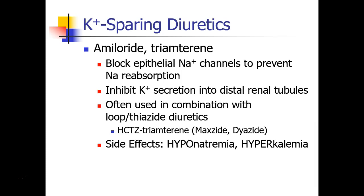Most of the drugs we've talked about involve losses of free water together with sodium, and most of them also cause losses of potassium. But there's a subset called potassium-sparing diuretics. These include amiloride and triamterene, often seen in combination with other drugs. They block epithelial sodium channels and prevent sodium reabsorption — that's your diuretic effect — but they inhibit secretion of potassium into the distal renal tubules, blocking a lot of the potassium losses seen with other drugs. They make a good combination with loop or thiazide diuretics; for example, drugs like Maxzide or Dyazide contain these combinations.